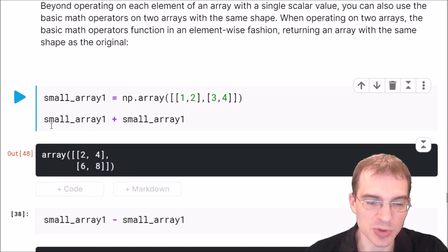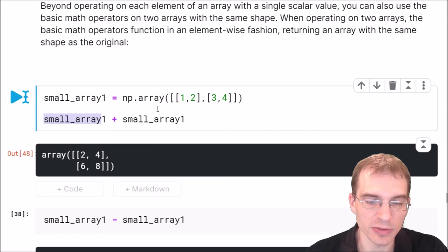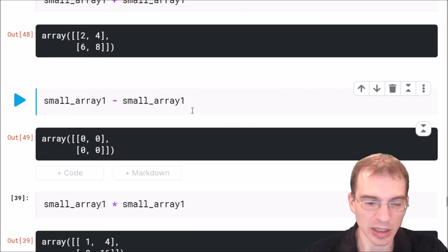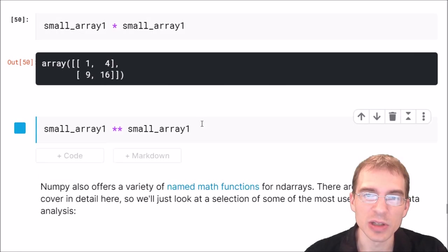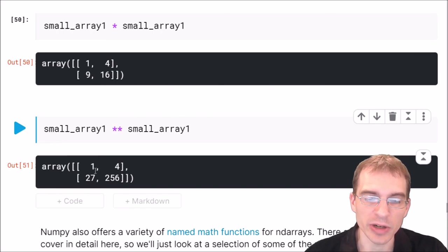If we subtracted small array from itself, everything would be 0 because it's doing it in an element-wise fashion. If we multiplied it by itself, everything would end up being squared. And if we use exponentiation, every item in small array will be raised to the power of itself. So this is 1 to the 1, 2 to the 2, 3 to 3, and 4 to the 4.